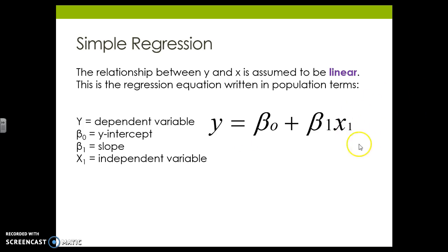For simple regression, we only have one x. For multiple regression, we'll just add on beta 2 x2, beta 3 x3, and continue. For today, one variable.